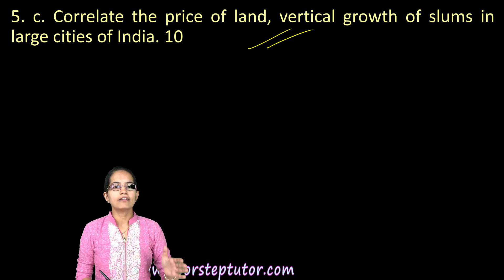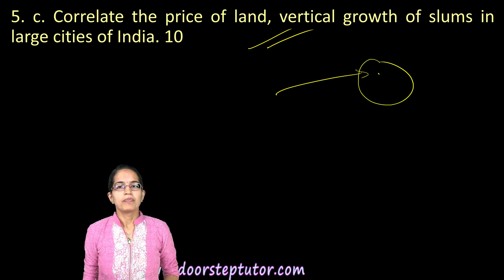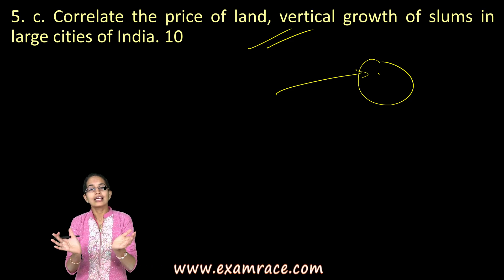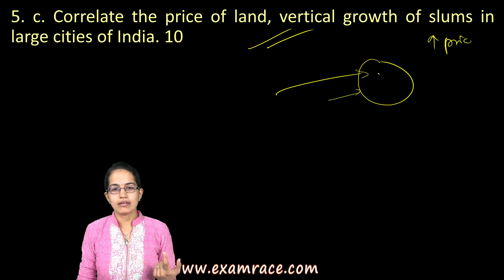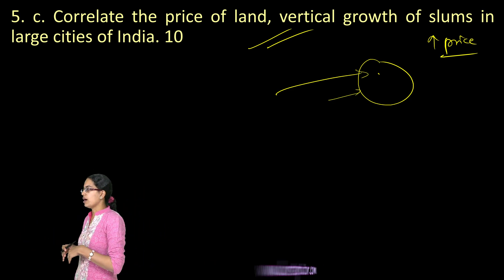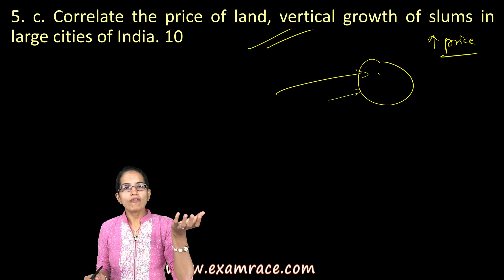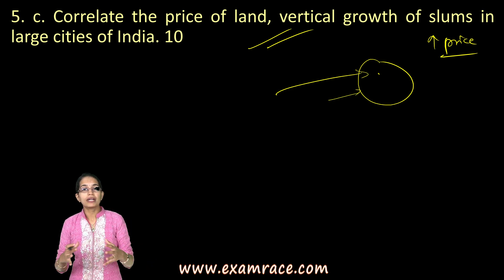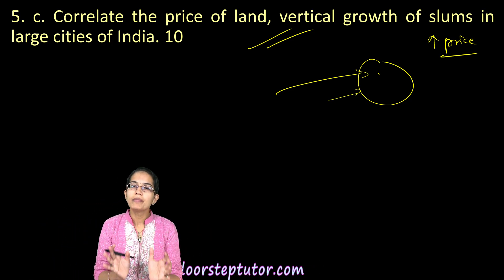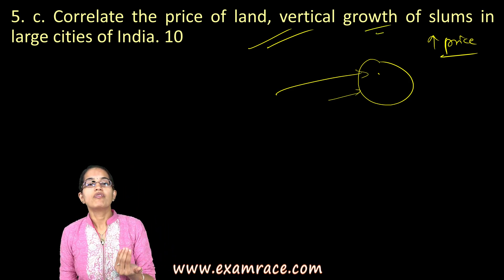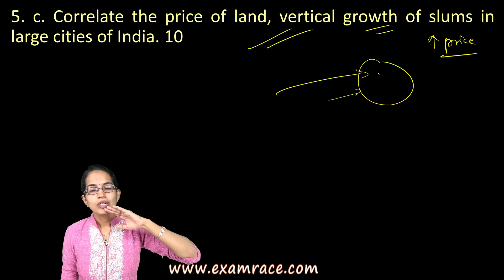The next question correlates the price of land with vertical growth of slums in large cities. With huge migration to urban areas, land is limited, and when people overflow into a limited parcel of land, prices shoot up — similar to oil prices or any other commodity. Slowly, with an automobile-dependent economy, vertical growth starts to take place because of limited availability of space, and vertical growth of slums has been seen in major Indian cities.